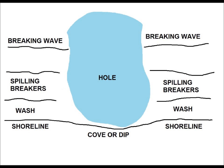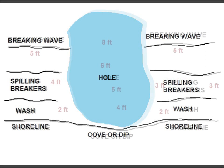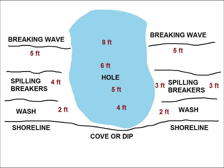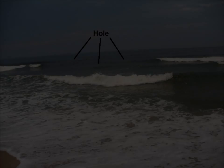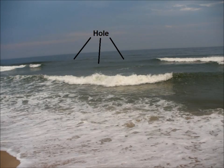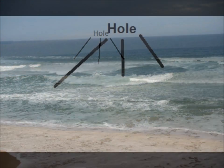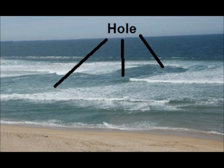It may only be two or three feet deeper than the surrounding bottom, but many times that's all you need. If the fish are in the area, they will know it's there and they will gravitate to it. Here are some pictures of what holes look like at the higher stages of the tide. Note how the waves break further out on either side of the holes — this is key in identifying their whereabouts.